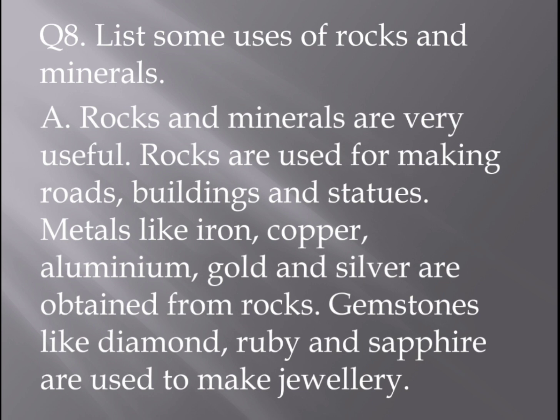Now let's look at some uses of rocks and minerals. Bauxite is used for road and building materials. Metals — which are minerals — like iron, copper, aluminium, gold, and silver are obtained from rocks. Gemstones like diamond, ruby, and sapphire are used to make jewelry. Gold and silver are also used for jewelry. Iron gives us iron utensils, copper gives us copper utensils and copper wires. All these rocks and minerals are used for many things.